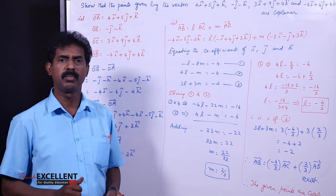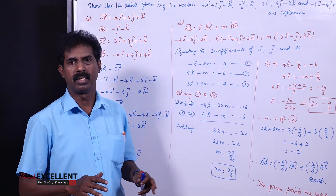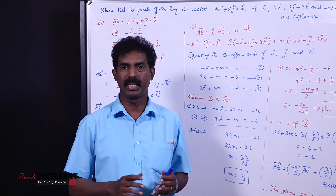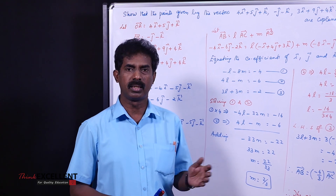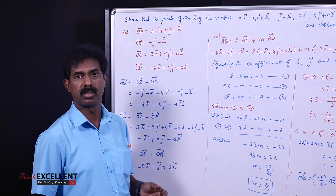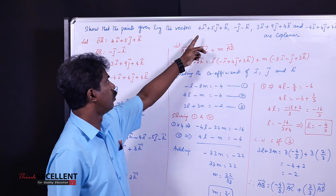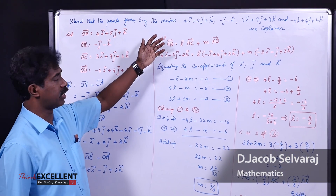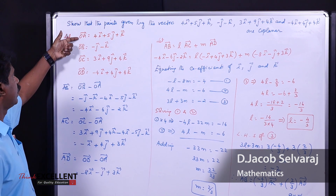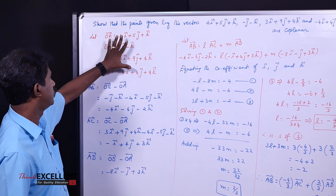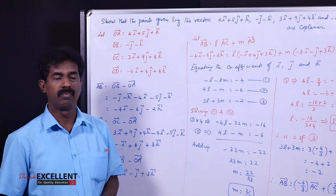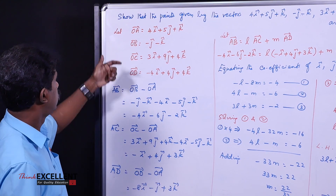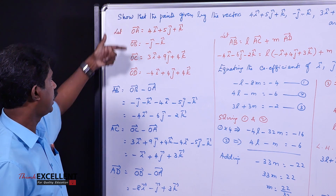Next we study coplanar vectors. Coplanar means the vectors lie in the same plane or are parallel. There are two types of questions: in one type, three vectors are given and you prove they are coplanar; in another type, four points are given and you show those four points are coplanar.